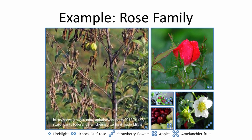Rosaceae, or the rose family, includes over 2,800 species. The family includes many ornamentals and edibles, including plums, cherries, peaches, apricots, almonds, apples, pears, raspberries, strawberries, and many more. It contains roses as well as many other ornamental, herbaceous, and woody plants. This family is a great example of how a pathogen can be shared among its members — the bacteria causing fire blight is able to spread among many of the woody members, decimating orchards and specimen plants in the landscape.